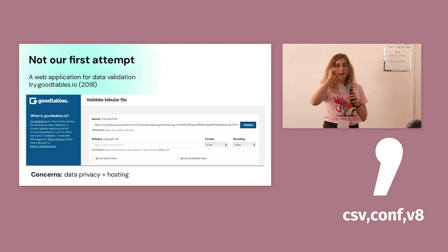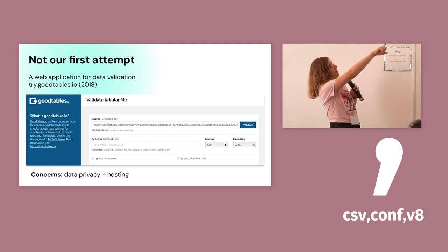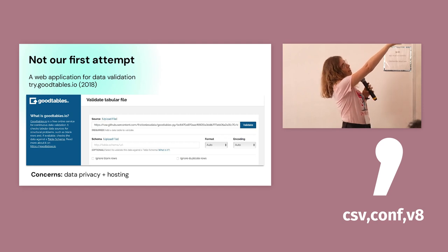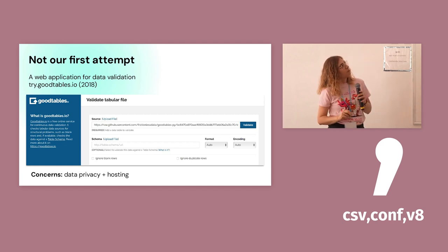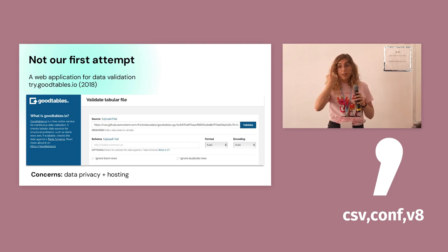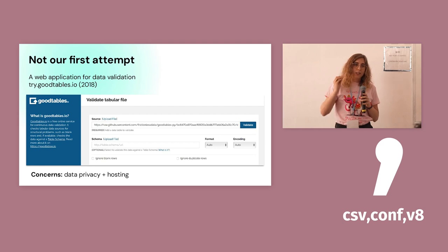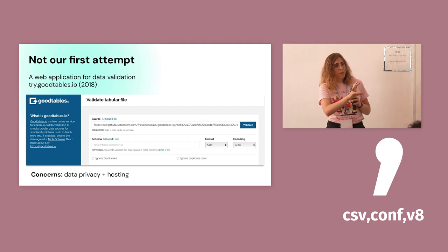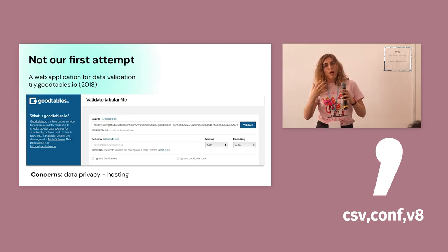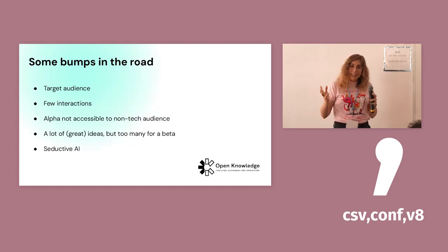One thing I wanted to clarify: this was not our first attempt at an application allowing people to access Frictionless functionalities. In 2018 we released a web application called try.goodtables.io, which was mainly doing data validation. Quite quickly we had big concerns around data privacy because the data was going into the cloud, and of course we had a problem of hosting. So when we started developing Open Data Editor, we already knew those were things we didn't want to do again — that's why we chose a desktop application, keeping everything locally and accessible even offline.